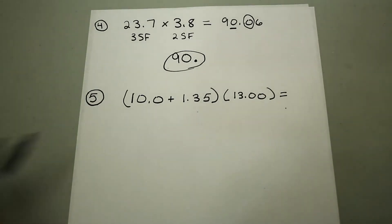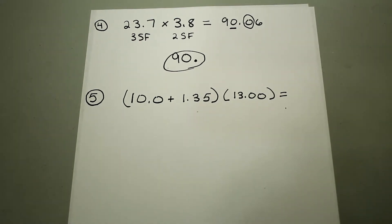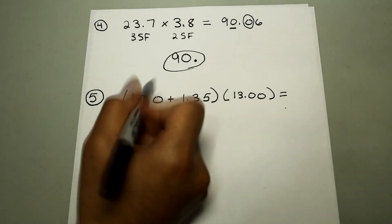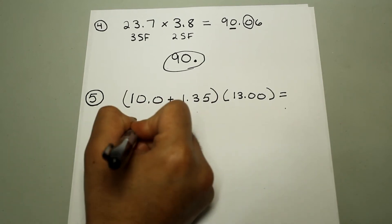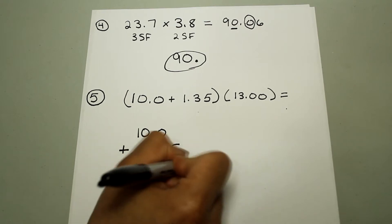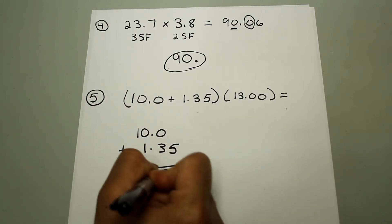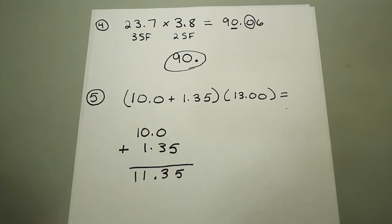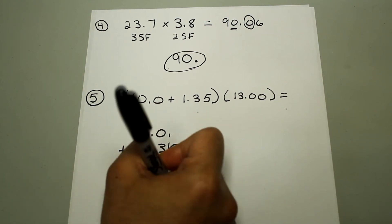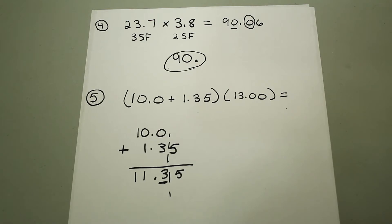Now we have mixed operations — addition and multiplication. In problems like these, you shouldn't round until the very end, but you should keep significant figures in mind. First we'll go ahead and add since it is inside the parentheses: 10.0 plus 1.35. Do not add any placeholders when you're adding or subtracting, so this will just be 11.35. If we draw a line right after the number with the least number of decimal places, the answer is 11.35. So the result has three significant figures. But we're not done with the entire problem, so we're not going to round — I'll leave this underlined so I know how many significant figures the answer is supposed to have.